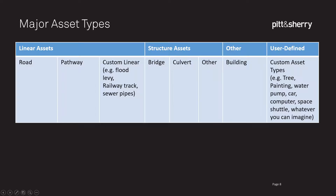Let's talk about the major asset types the software can handle. On the left we have our linear assets, which came from RoadAssist: road, pathway, and custom linear assets such as flood levees, railway tracks, or sewer pipes. Then we have structure assets, which came from BridgeAssist: bridge, culvert, and others like a marine asset such as a jetty. We also have building assets, which are fairly basic at the moment but we'd like to add more cleverness working with our building team. And then there are user-defined assets — custom asset types you define yourself. Examples could be a tree, a painting, a water pump, a car, a computer, a space shuttle — whatever you can imagine, you can create it in AssetAssist.